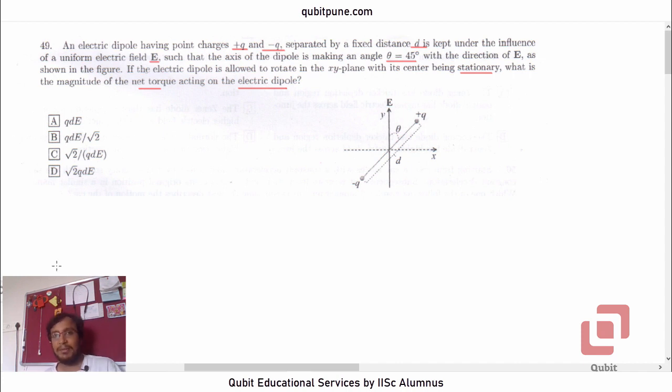The MCQ is extremely simple. In the vector notation, the torque is equal to P bar cross E bar. And because we want the magnitude, we can just say tau is equal to PE sin theta, where theta is the angle between the two vectors.